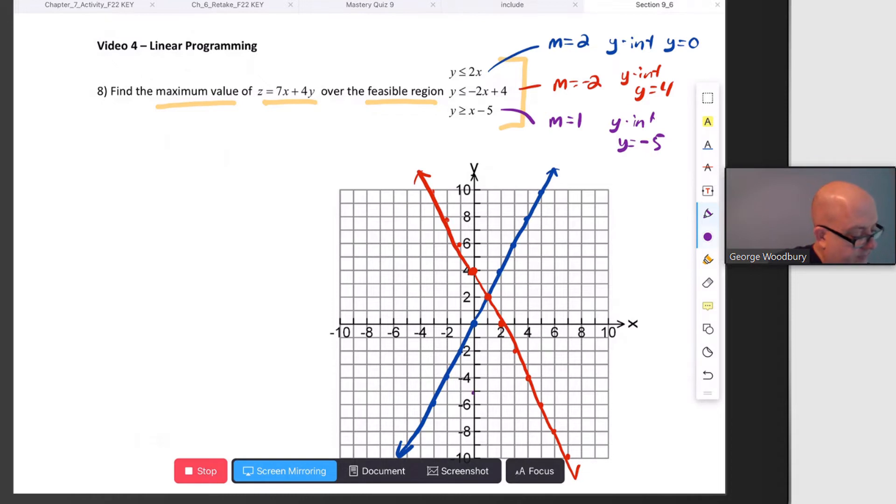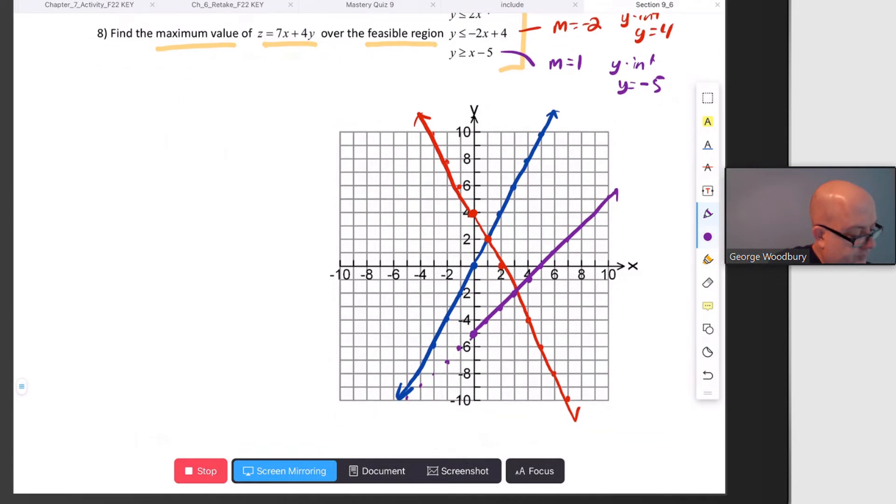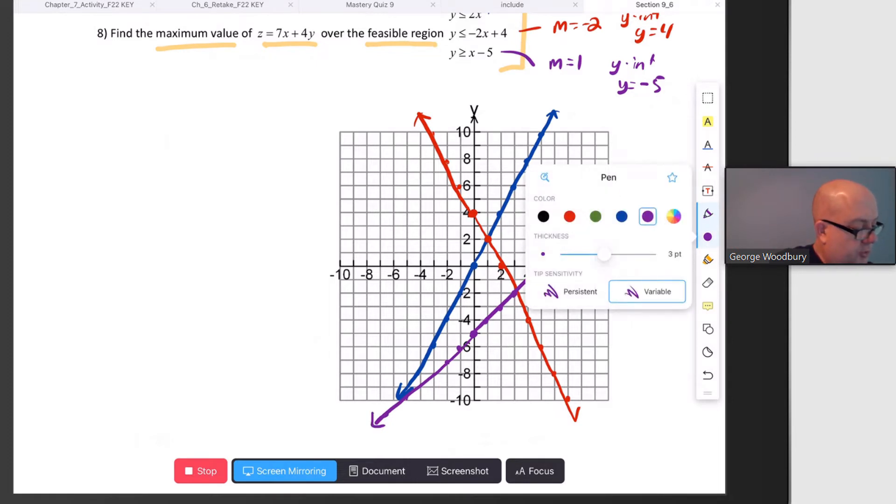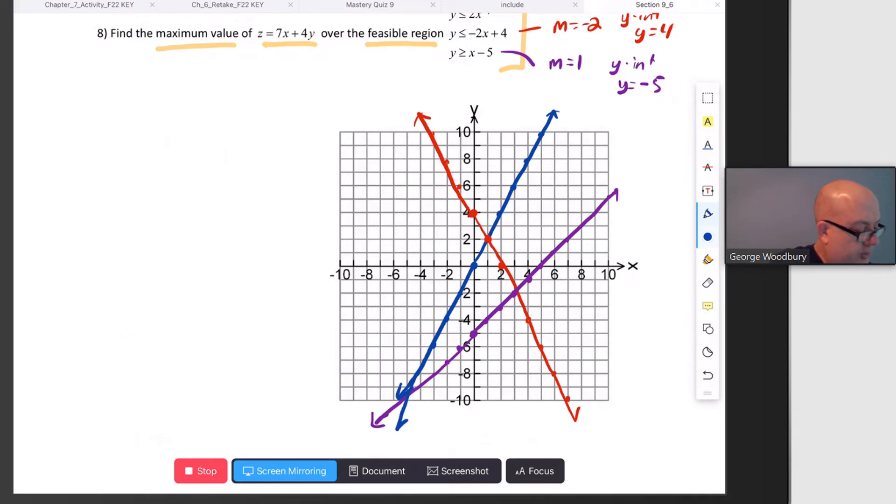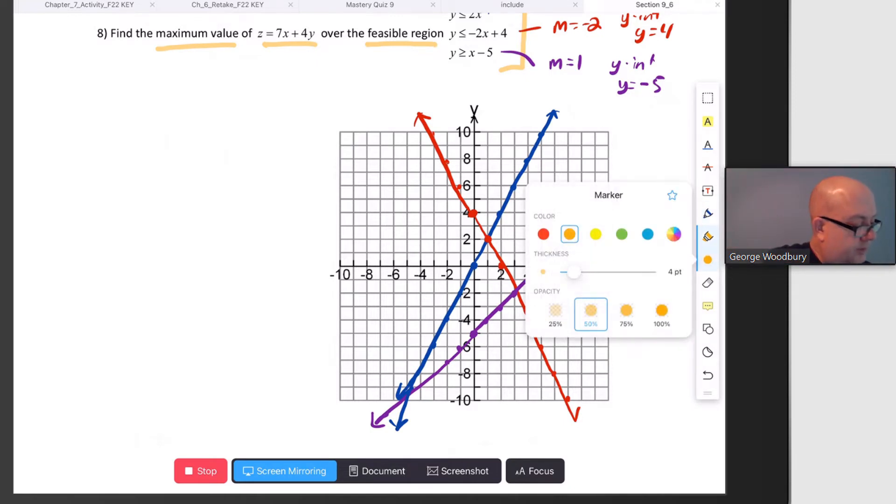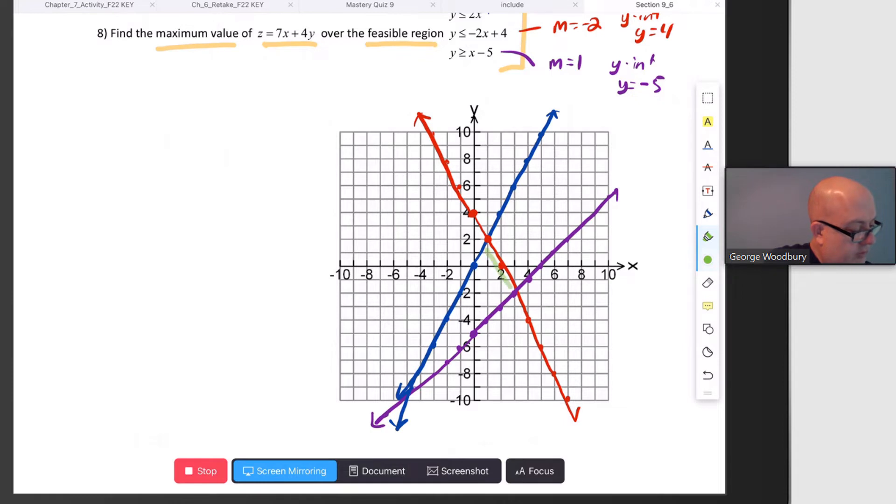we're going to shade above. At -5, slope is 1, so up 1, over 1, and down 1, 1 to the left. Let me get that blue line to come down and through there, too. We wanted above that. The region that we're working with is enclosed here.